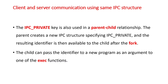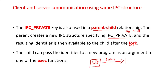The IPC_PRIVATE key is also used in parent-child relationships. The parent creates a new IPC structure by specifying IPC_PRIVATE, generating a unique key that is converted to an identifier. After the fork system call, the child automatically receives this identifier. The child can then pass this identifier to a new program as an argument to the exec function, so whatever ID is generated from the key is made available to the new program.